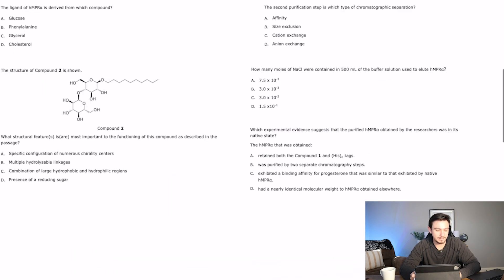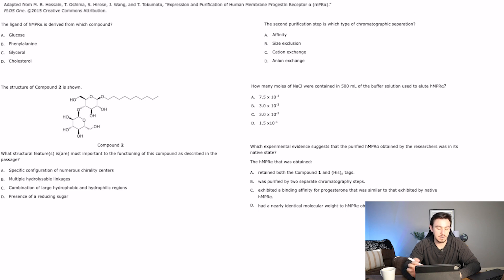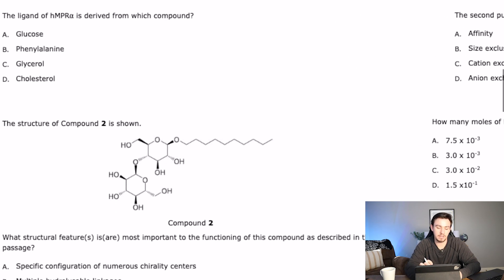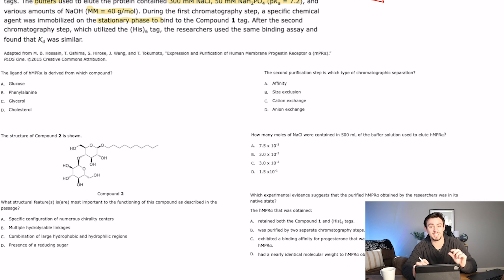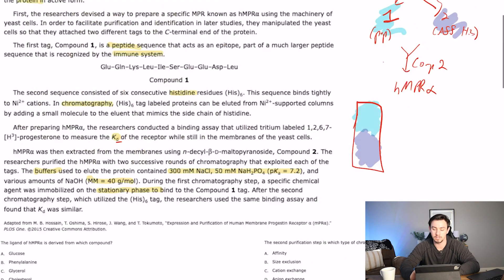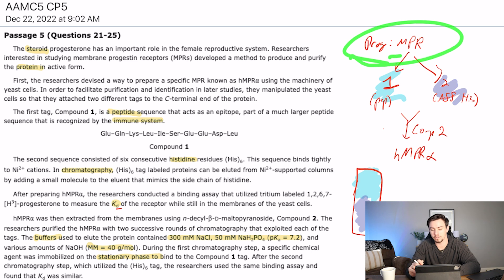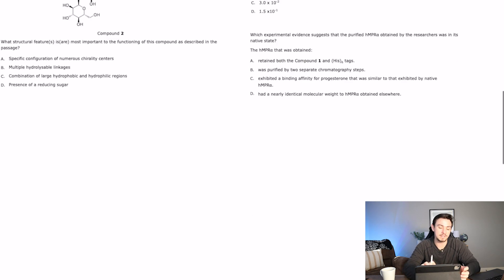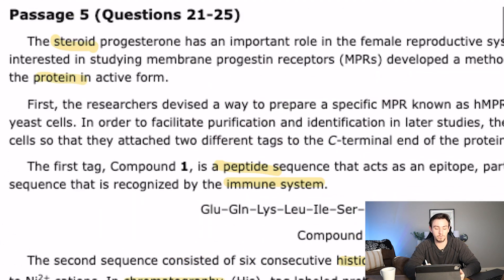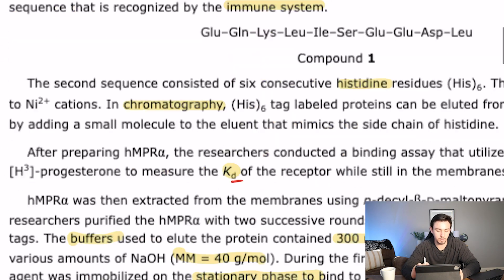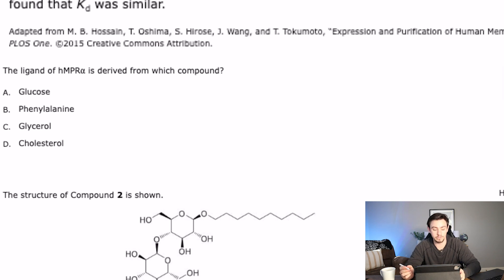So question number 21 says, the ligand of HMPR alpha is derived from which compound? Okay, so before you simplify this question, you've got to say, okay, well, what is the ligand? So what's binding? Remember, the ligand is something that binds to a protein. So what binds to HMPR alpha? Well, we've got that in our flowchart. Progesterone binds to NPR and HMPR alpha is a type of NPR. So now this question is pretty simple because they told us that progesterone was a steroid. This question is, which of these is the precursor for steroids? And the correct answer for that is cholesterol. Cholesterol is in all of our sex hormones.